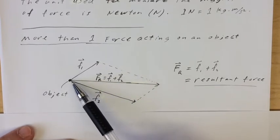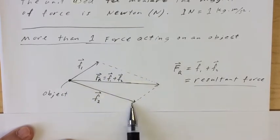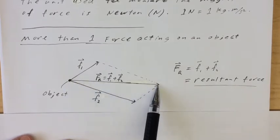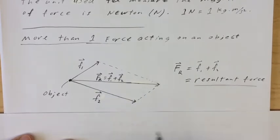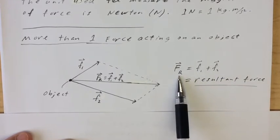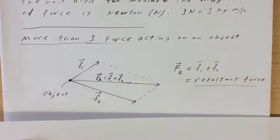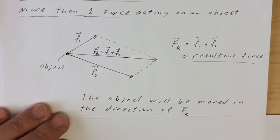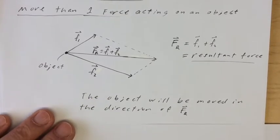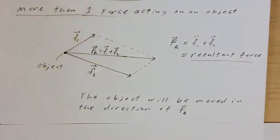For example, you've got somebody pulling on this object with, say, 10 newtons in one direction, and somebody pulling on it with 25 newtons in another direction. The object will appear to be pulled in a resultant direction with a force you'd have to work out using trigonometry — probably the sine law or cosine law. FR, which is the resultant force of more than one force acting on an object, equals F1 plus F2, and the object will move in the direction of FR.